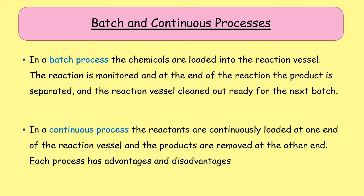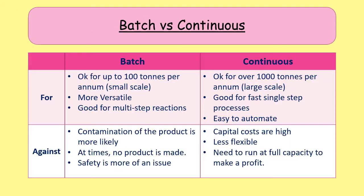A continuous process is different — it is where the process is running almost 24/7 and you're constantly putting in new reactants, feeding them into the reactor, and getting product out at the end. A batch process gives you a lot more control, while a continuous process gives you a lot more volume of product, so each process has advantages and disadvantages. For batch processes, they are much more versatile and can be adapted for multi-step reactions, but are typically used on small scale reactions. The problem is that contamination can be a very serious issue, the reactor is often turned off during purification, and because reactions tend to be more complicated and multi-step, safety can be a bigger issue.